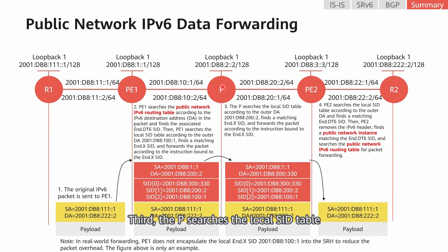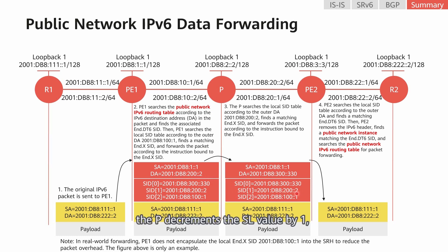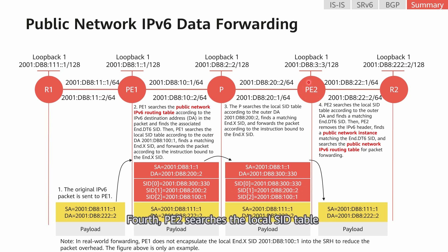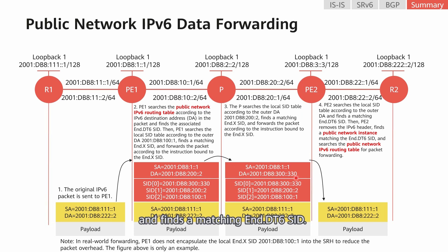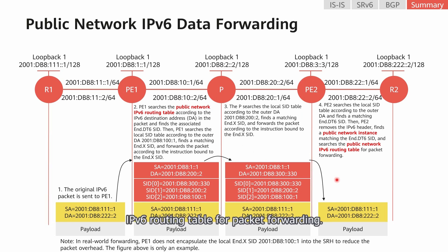Third, the P searches the local SID table according to the outer destination address and finds a matching end.x SID. According to the instruction bound to the end.x SID, the P decrements the SL value by one, changes the destination address, and then forwards the packet through the outbound interface bound to the end.x SID. Fourth, P2 searches the local SID table according to the outer destination address and finds a matching end.dt6 SID. Then P2 removes the IPv6 header, finds a public network instance matching the end.dt6 SID, and searches the public network IPv6 routing table for packet forwarding.